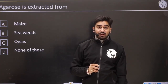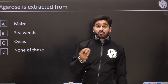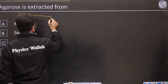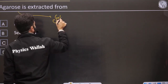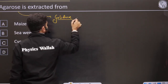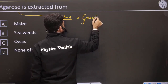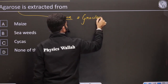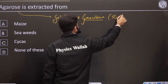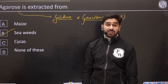Agarose is extracted from agar-agar. Agar-agar comes from Gelidium and Gracilaria. Both of them are red algae, and both are seaweeds.